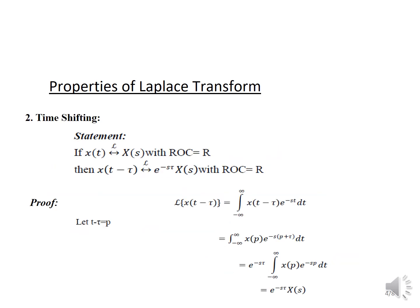Second property: time shifting. Statement — if the Laplace transform of X(t) is X(s) with ROC equal to R, then the Laplace transform of X(t − τ) is e^(−sτ)·X(s) with ROC equal to R. To prove this, we evaluate the integral from −∞ to ∞ of X(t − τ)·e^(−st) dt. Using the substitution p = t − τ and converting all terms in p, and applying the standard formula, we obtain e^(−sτ)·X(s).